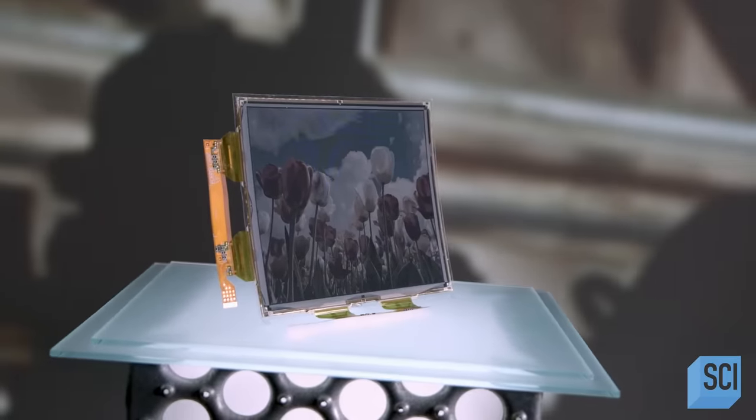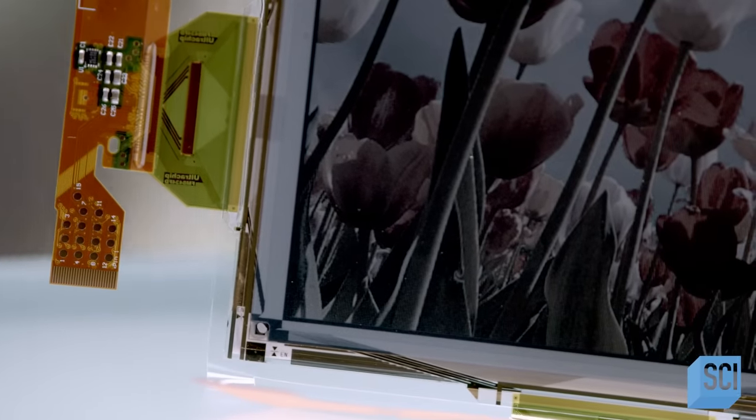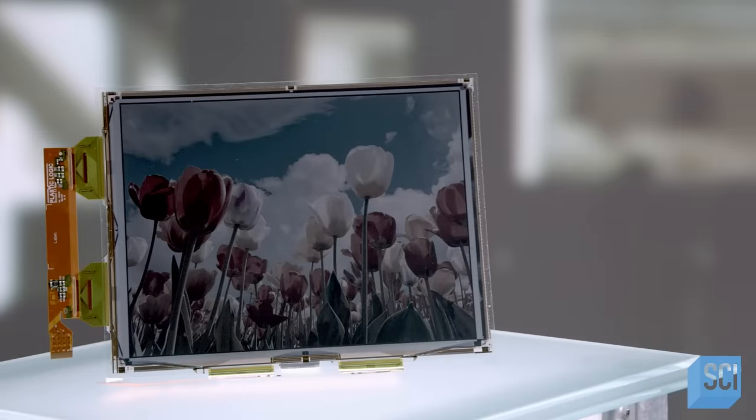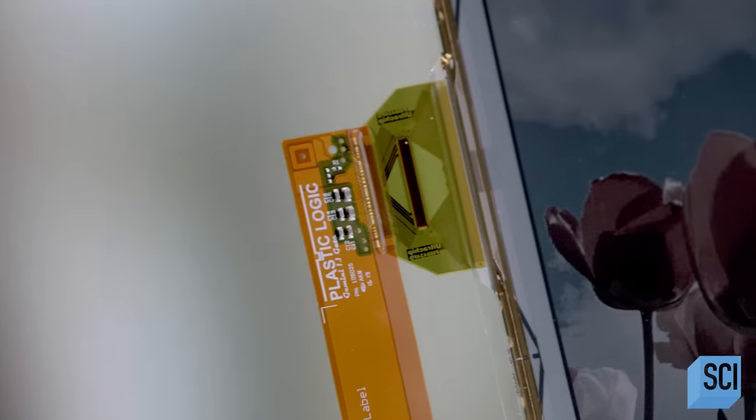Electrophoretic technology mimics the effect of ink on paper. The screens reflect light, unlike conventional backlit displays that emit light. Also known as e-paper, this technology has changed the way we see our screens.